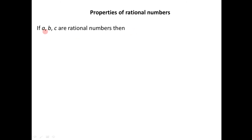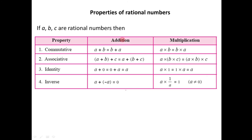Now let us look at some properties of rational numbers. Suppose there are three rational numbers A, B, and C. The first property is the commutative property for addition: the addition of two rational numbers is irrespective of order, meaning A plus B equals B plus A. If we take these numbers in any order and add them, the answer is the same. Similarly, multiplication is also commutative: A times B equals B times A.